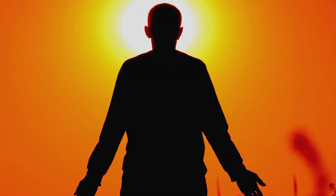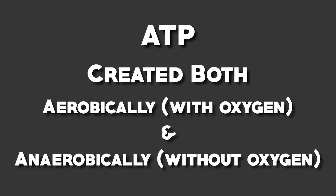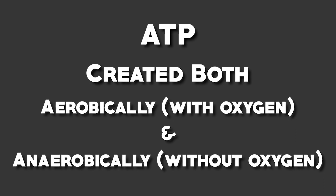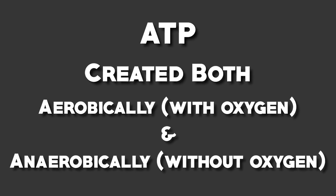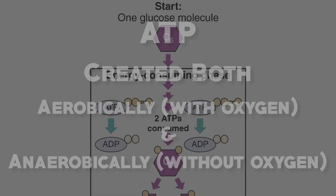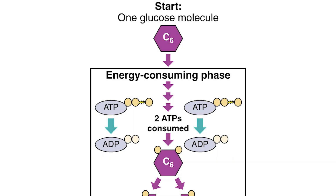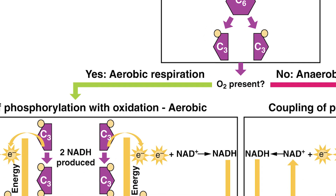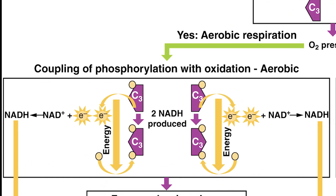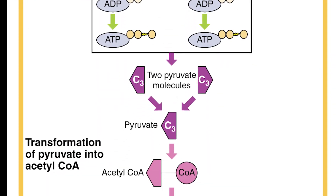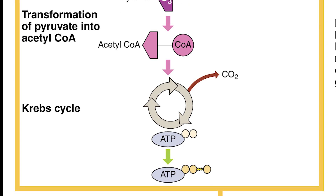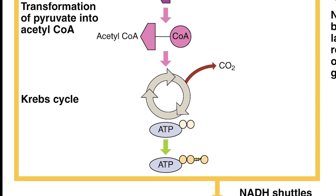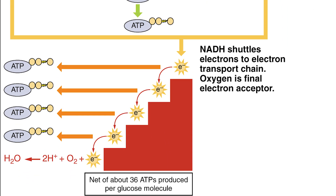ATP can be created both aerobically with oxygen and anaerobically without oxygen, but the processes in which they are created are a little different. First, we have aerobic metabolism, which occurs when the body has enough oxygen available to create energy. Glucose is converted into something called pyruvate thanks to the Krebs cycle. Pyruvate then enters the mitochondria — the powerhouse of the cell — and combines with oxygen to create energy. This energy pathway is very efficient, but it's pretty slow.